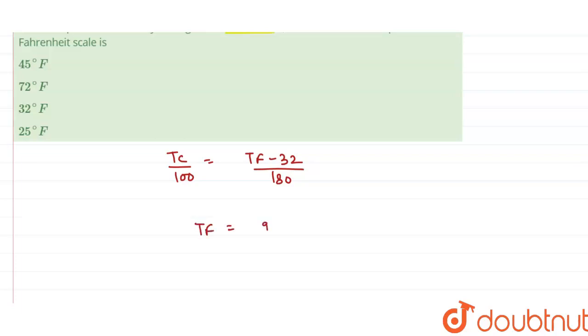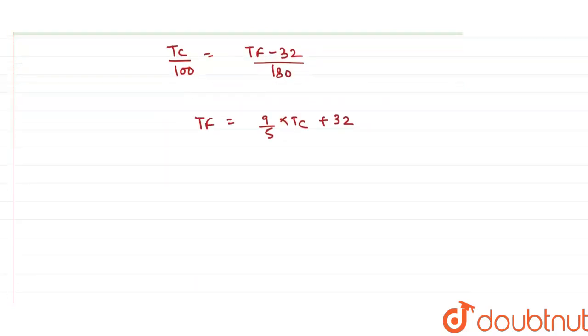Now the change can be written as: the change in Fahrenheit scale can be written in the form of change as delta Tf equals to 9/5 times delta Tc. Change in Fahrenheit scale equals to 9/5 times change in Celsius scale. So the change in Celsius scale is given in the question which is 25, so solving this...